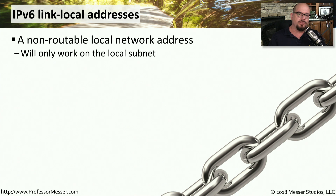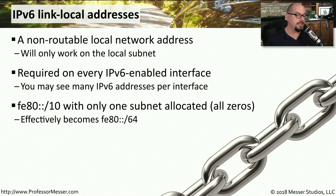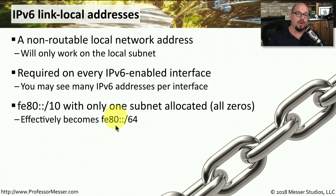This idea of having a link-local address is also available in IPv6, and in IPv6 it's a functionality that's automatically assigned to every IPv6-enabled interface. So your local IPv6 interface may have both a link-local address and an IPv6 address that allows it to communicate outside of your local subnet. The range for these link-local addresses in IPv6 begins with FE80 followed by all zeros, with only one subnet allocated — effectively FE80 with zeros in the first 64 bits, and the last 64 bits assigned as the node address.